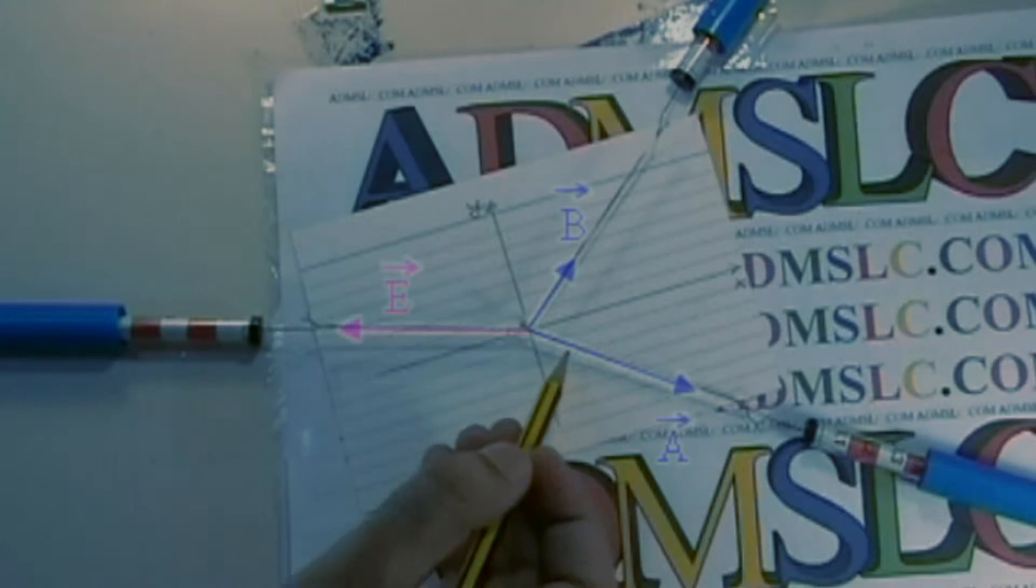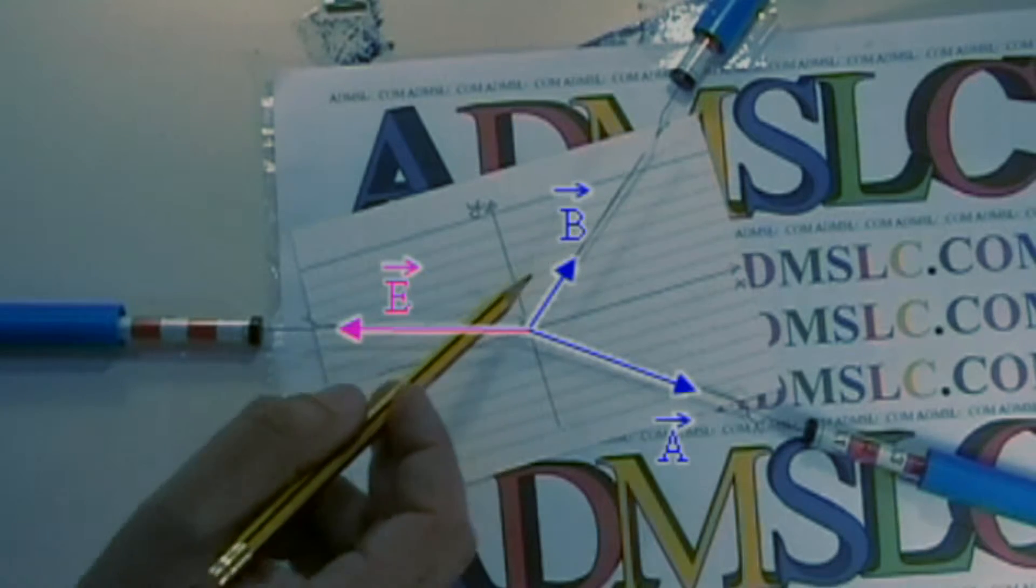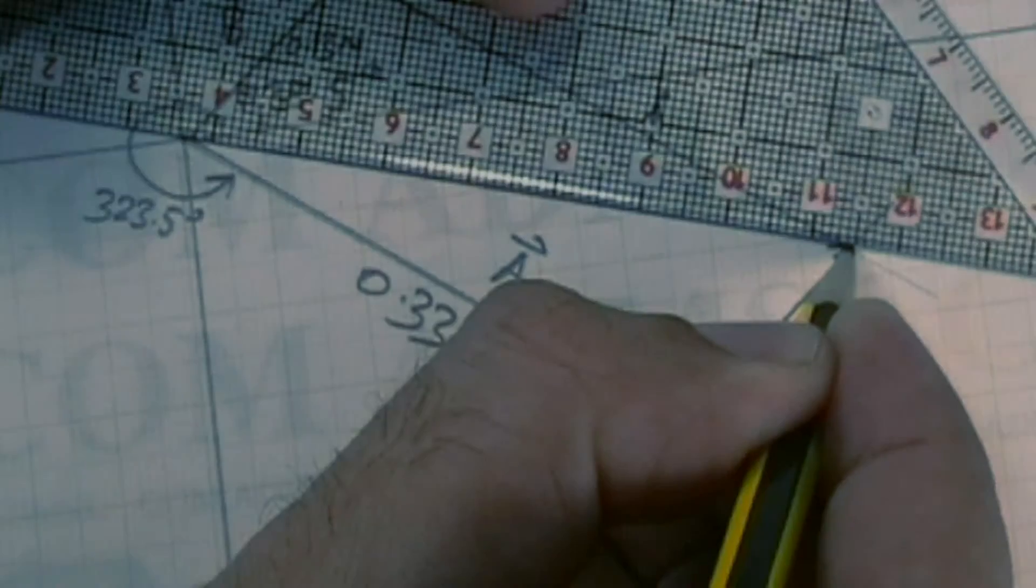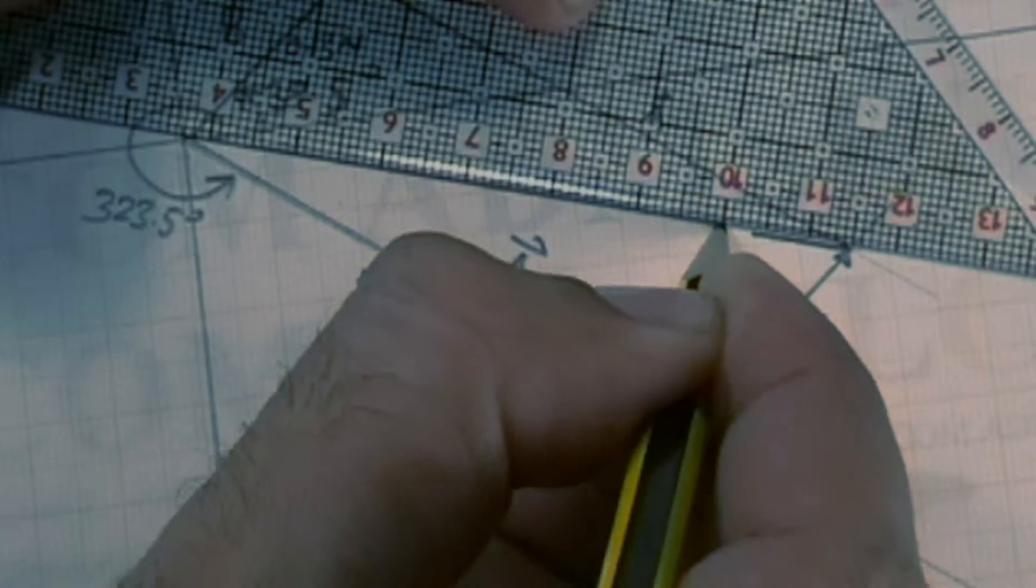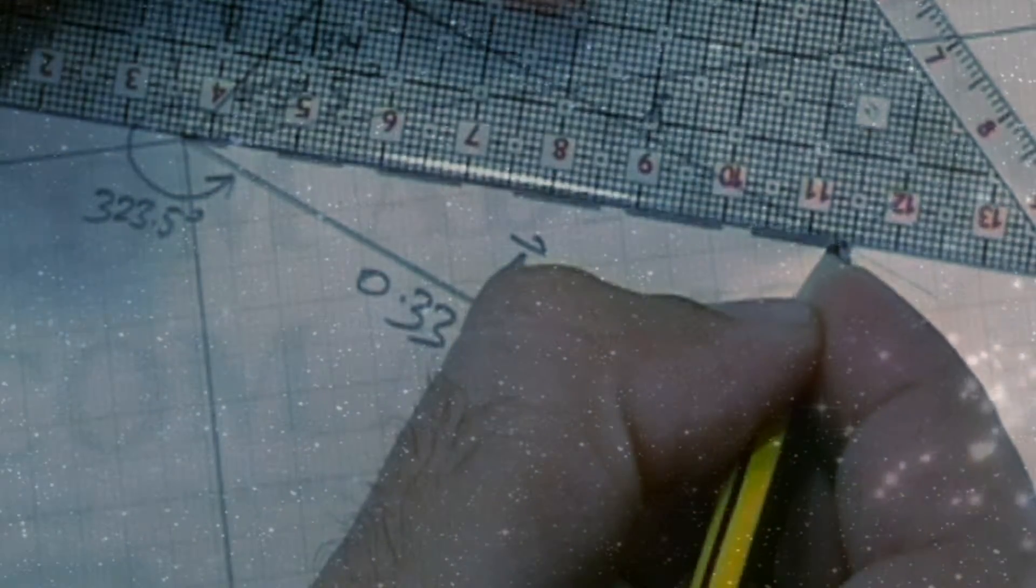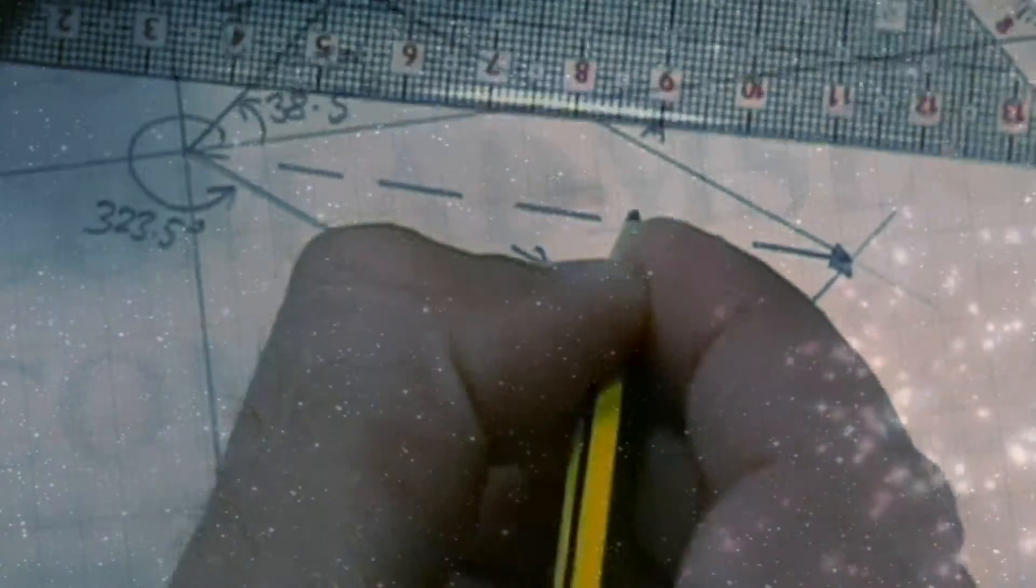So let's say this is vector A and this is vector B and this is vector E. So this is my resultant. This is my outcome.